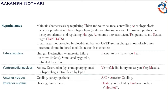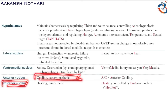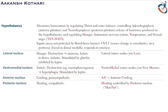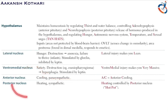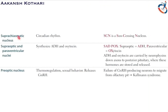The anterior nucleus is responsible for cooling or parasympathetic stimulation, whereas the posterior nucleus is responsible for heating or sympathetic activity. So: lateral nucleus for hunger, ventromedial nucleus for satiety, anterior nucleus for cooling (parasympathetic), and posterior nucleus for heating (sympathetic).